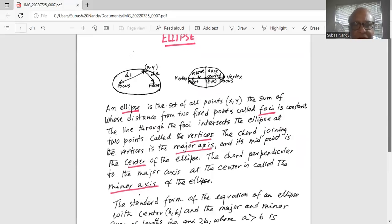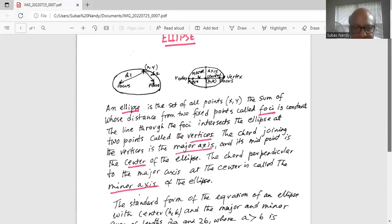The chord perpendicular to the major axis at the center is called the minor axis of the ellipse.